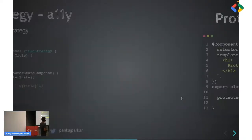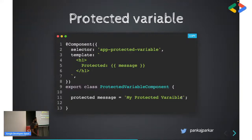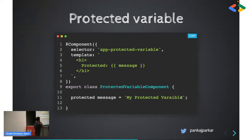Moving on to protected variables. Earlier in Angular templates, you would not be able to use protected variables — protected is an access modifier meaning the current class and its descendants can use the property but others can't. Angular 14 has solved that, and this has benefited many third-party libraries doing component inheritance. Otherwise the workaround was making the variable public, which wasn't good.